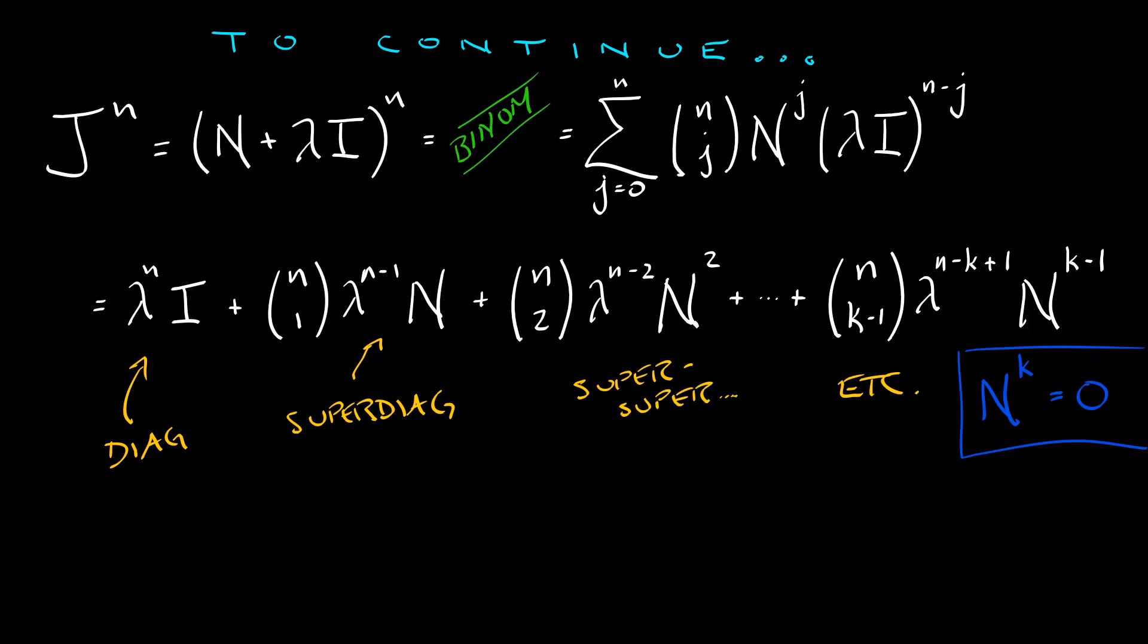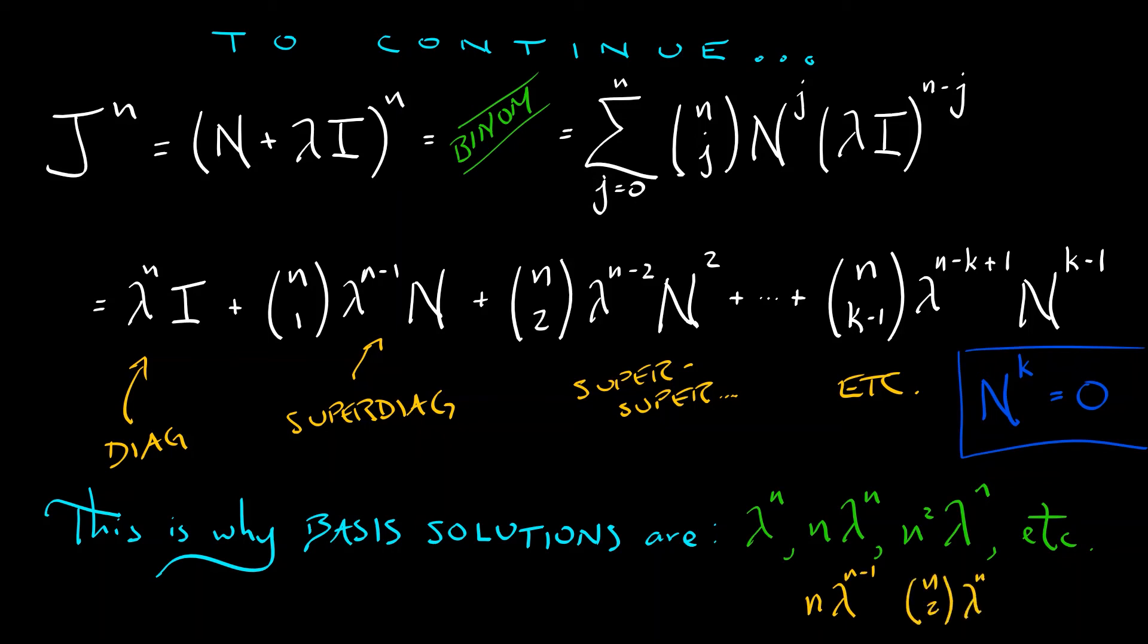Now, if you step back and think about what we claimed was true when we were talking about kth order systems in discrete time, we said that the basis solutions are lambda to the n and n times lambda to the n and n squared times lambda to the n all the way down the line. Well, the reason why those are the basis solutions is that that's what appears on the first row of this power up to the arbitrary coefficients, where you've got those k factorials in there, but also powers of lambda. We can get rid of that to simplify things. That's why the basis solutions look the way that they do.